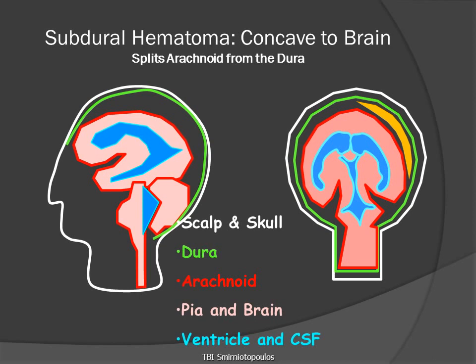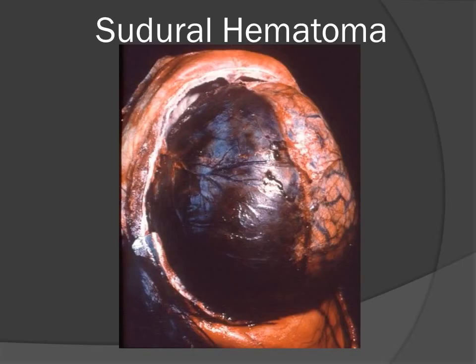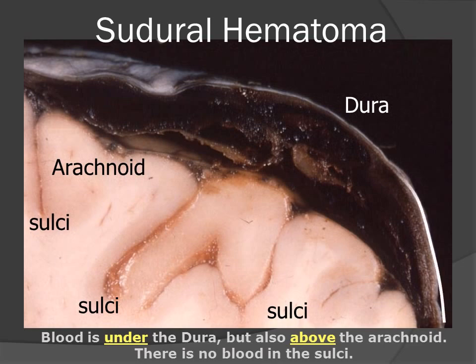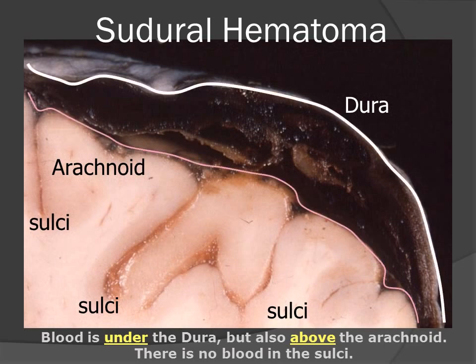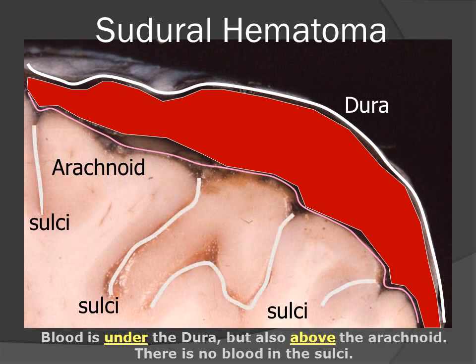A subdural hematoma is splitting the arachnoid from the dura. The actual location is therefore under the dura but over the underlying arachnoid membrane. Subdural hematomas cross the sutures and will wrap around the cerebral hemisphere following the arachnoid as it surrounds the brain. This gross picture illustrates a subdural hematoma overlying the patient's left hemisphere. In this coronal section, we can see the white membrane of the dura, the arachnoid membrane, and the subdural hematoma between these two layers. Notice that the sulci do not contain any blood — the blood is prevented from entering the sulci by the arachnoid membrane.